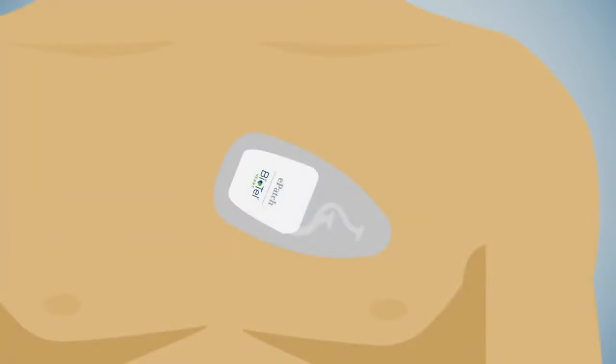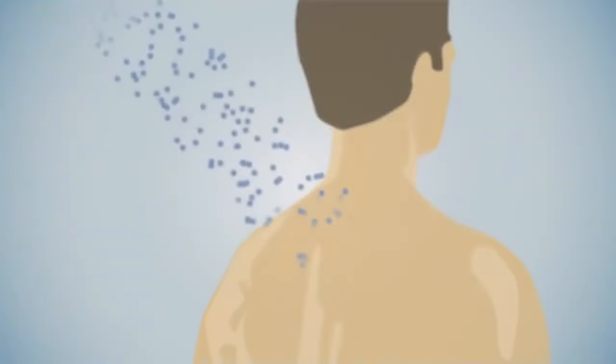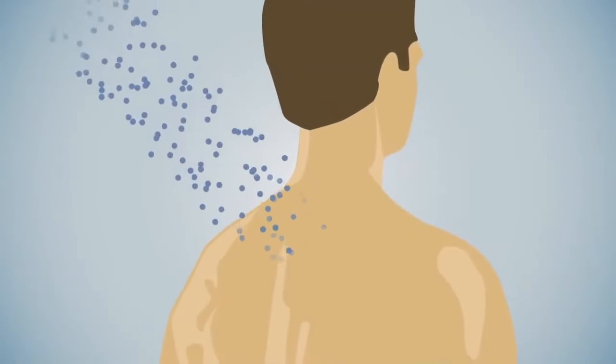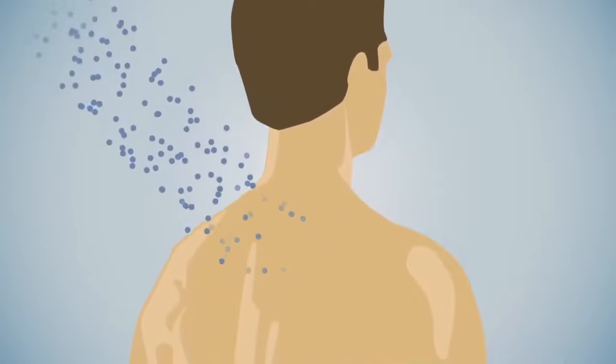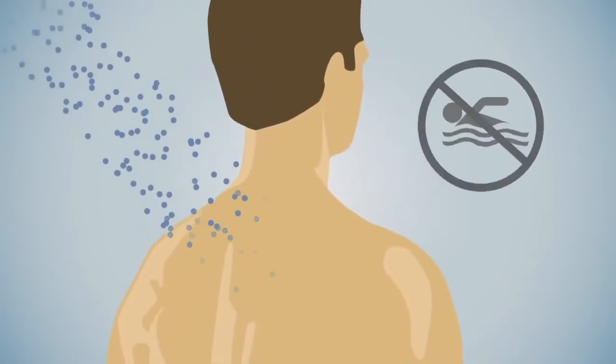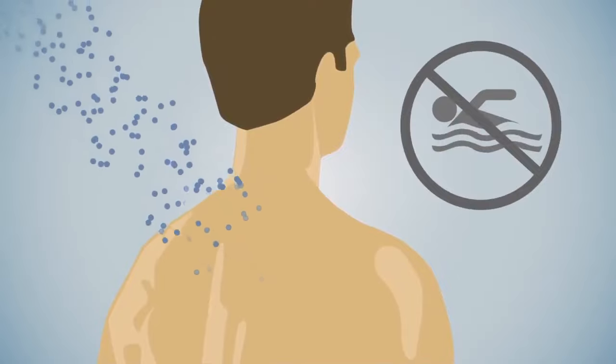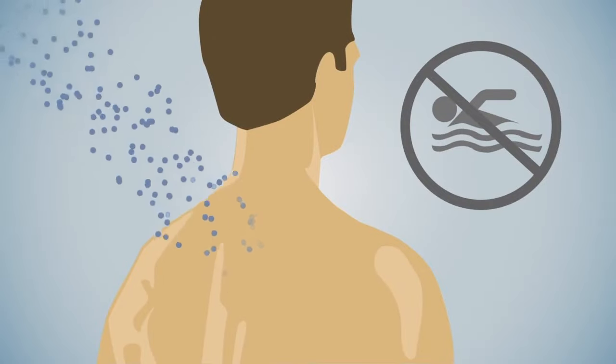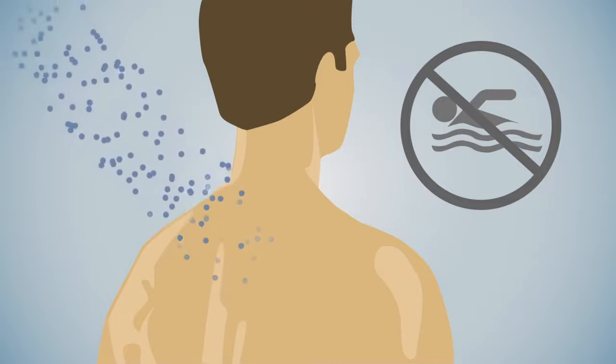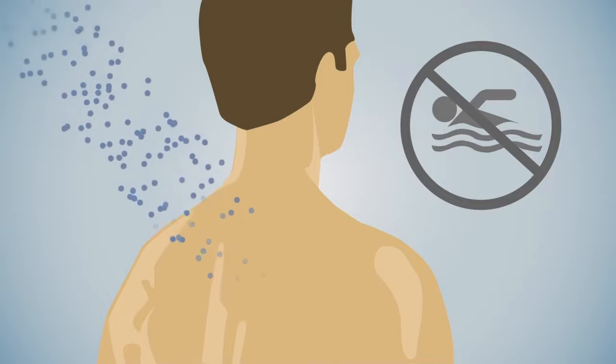When the patch containing the sensor is properly affixed to your skin, you can shower and exercise as normal. While ePatch components are water resistant, they are not waterproof. Therefore, swimming or bathing should be avoided. For optimal results while showering, avoid spraying water directly on the sensor and keep it away from the shower head.